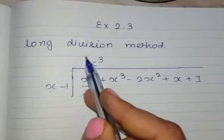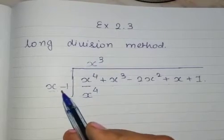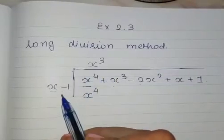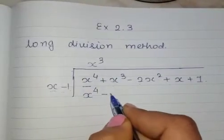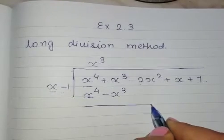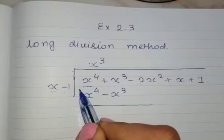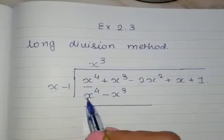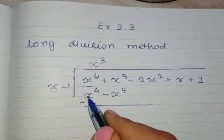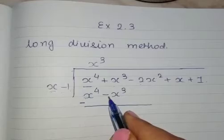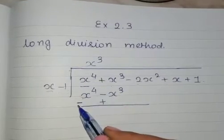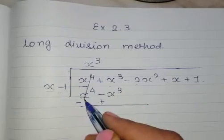Every time you have to multiply the quotient with both these terms. So X cube into minus 1 will give us minus X cube. Then the normal subtraction process. When we put minus over here, the sign of both these terms will be changed. This will be minus as it is plus. This is minus so it will become plus. X raised to 4 and minus X raised to 4, this will be cut.